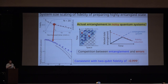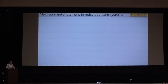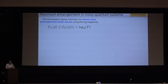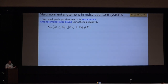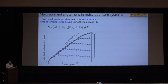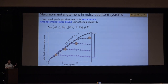Computing mixed-state entanglement entropy is computationally challenging. Instead, we developed a more convenient proxy to estimate the lower bound of mixed-state entanglement in noisy quantum systems. Applying this proxy to measured fidelities, we observe an inverted U-shape in the entanglement growth profile — different curves correspond to different system sizes. This allows us to identify the maximum entanglement we can create for different system sizes.